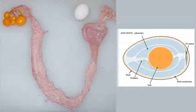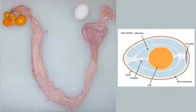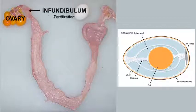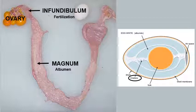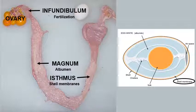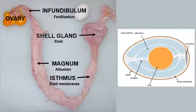So the assembly line for the creation of an egg includes the ovary where we find the yolk, the infundibulum where fertilization takes place, the magnum where the albumin and chalazae are added, the isthmus where the shell membranes are added, and finally the shell gland where the shell is added.